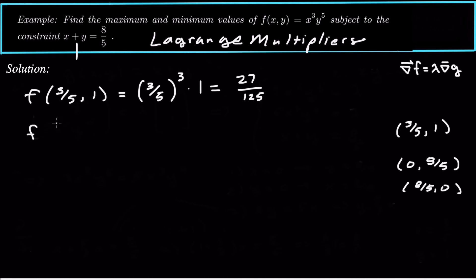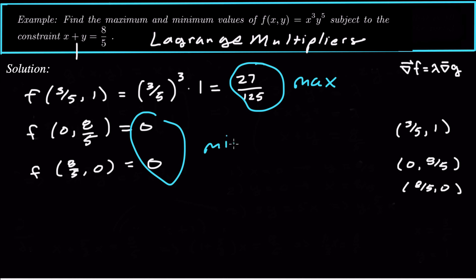And then look at the next function value, f of 0, comma 8 fifths. Well, that's going to be 0, because x equals 0. That's going to be 0. So then last, f of 8 fifths, comma 0 is also going to be 0, because y equals 0 here. So the max is 27 over 125, and the min is 0, and that is the solution to our constrained optimization using Lagrange multipliers.